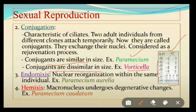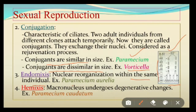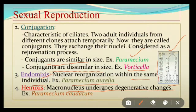Conjugants may be similar in size — example Paramecium — or dissimilar in size — example Vorticella. The next type of sexual reproduction is endomixis, where nuclear reorganization takes place within the same individual — example is Paramecium aurelia. Endomixis generally takes place when conjugation is prevented from occurring. Coming to hemixis: in endomixis, total nuclear reorganization takes place, whereas in hemixis, the macronucleus undergoes only degenerative changes. The best example is Paramecium caudatum.